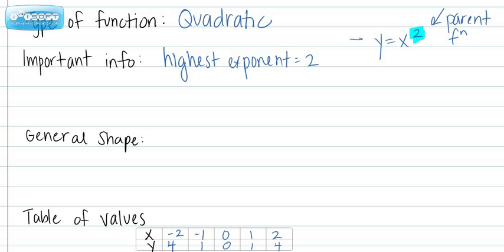We have the most basic quadratic function over on the right, which is y equals x squared. We call this a parent function because there's no translations occurring.